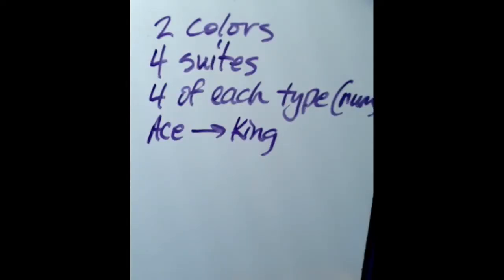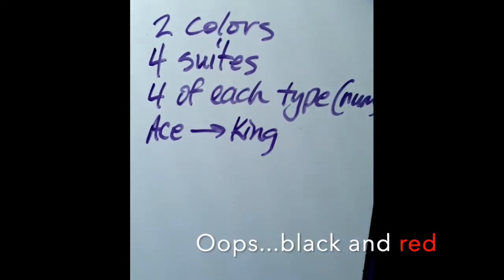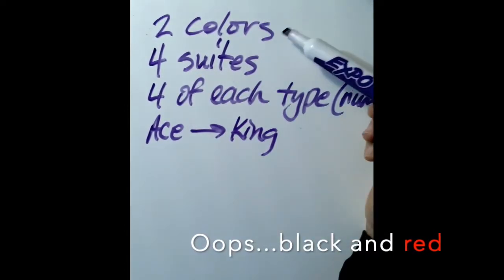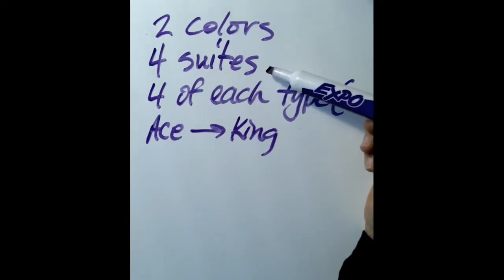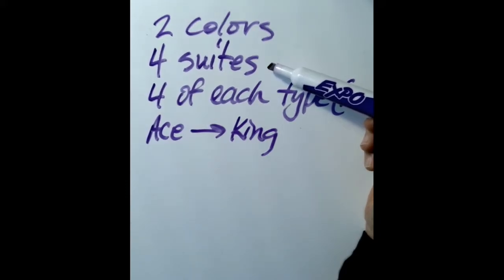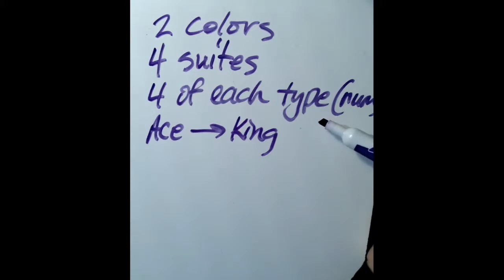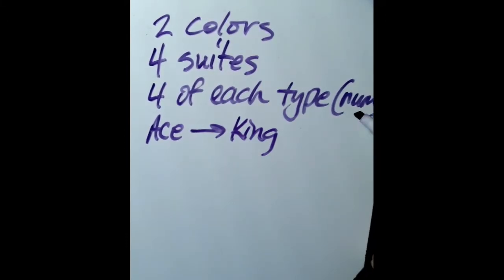So there are two colors in a deck of cards — black and red. There are four suits: hearts, diamonds, spades, and clubs. There are four of each type of card — four kings, four queens, four jacks, four tens, and so on — going from ace through king.